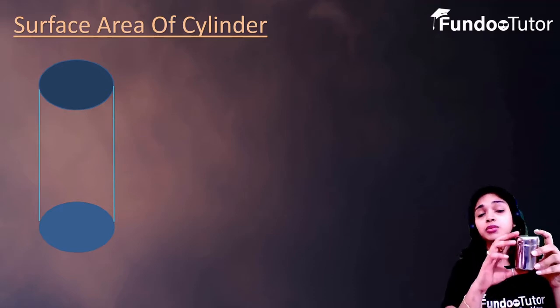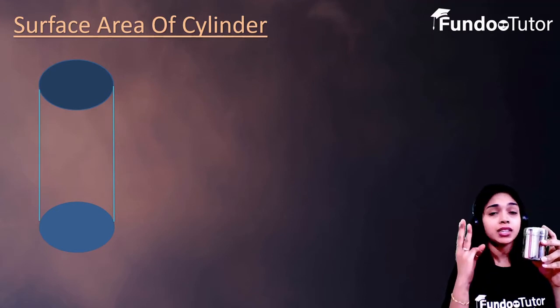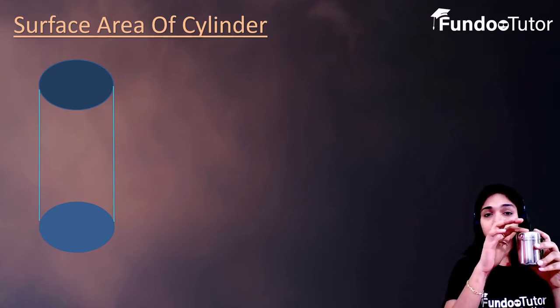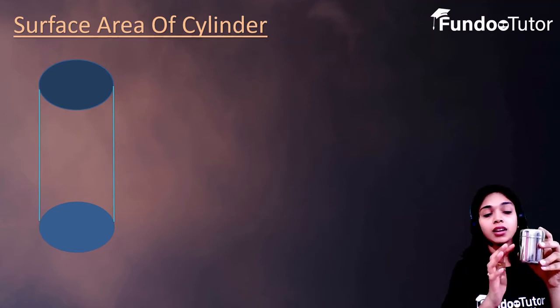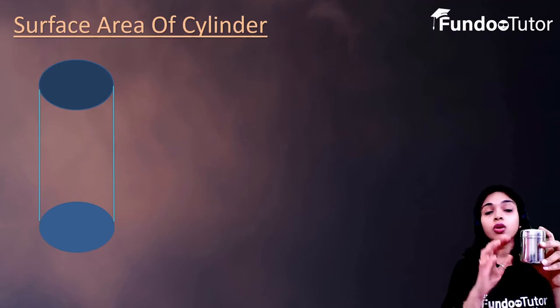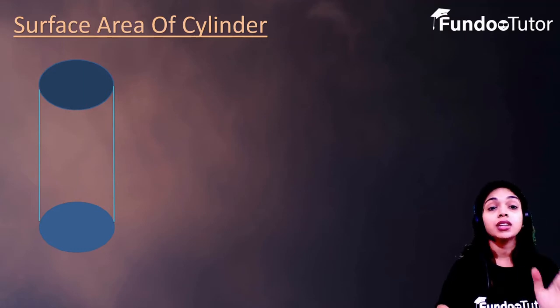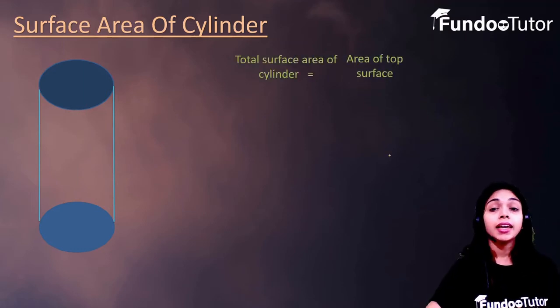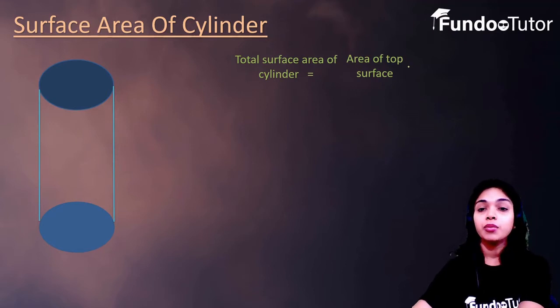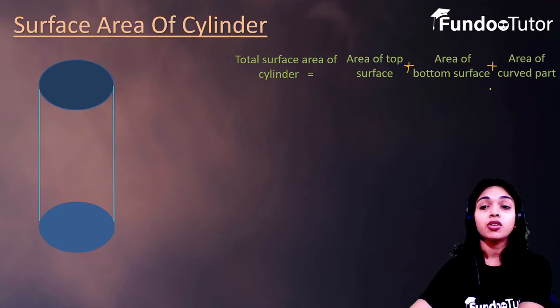If we talk about the cylinder's surface area, then there are three surfaces in cylinder. Top surface is a circle, bottom surface is a circle and this is a curve bar. So, we can say that total surface area of cylinder is area of top surface, plus area of bottom surface, plus area of curved part.